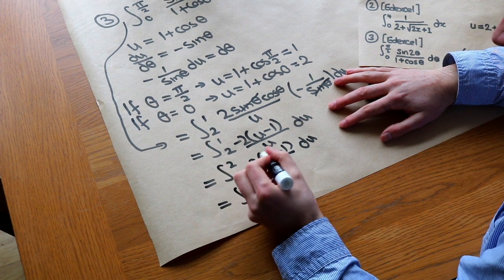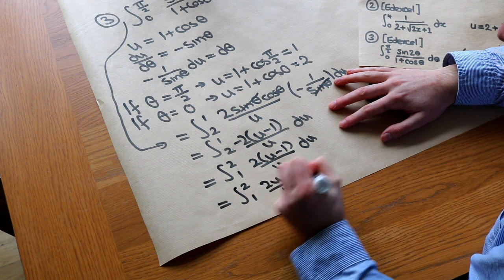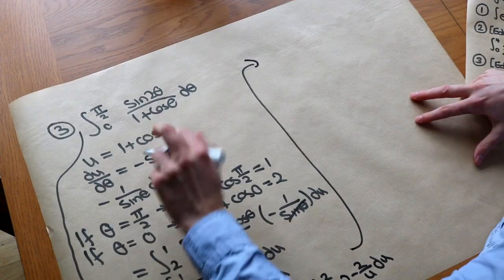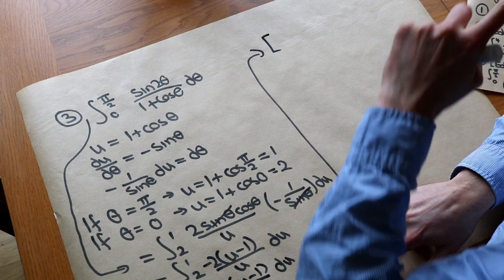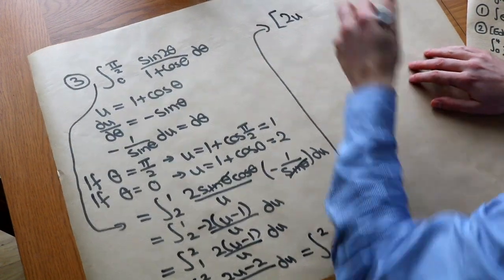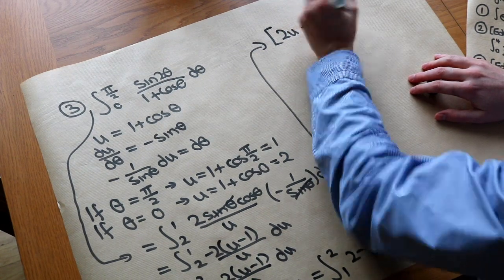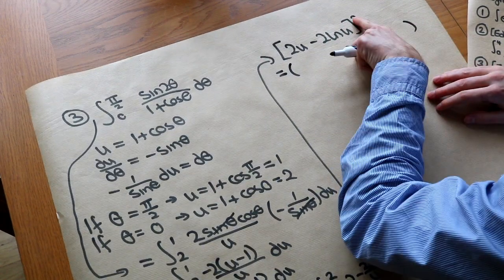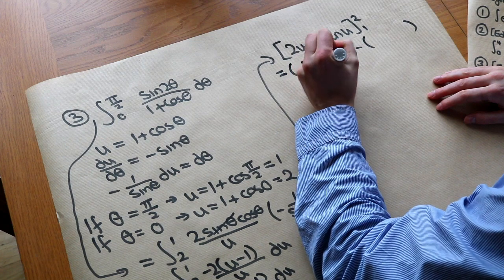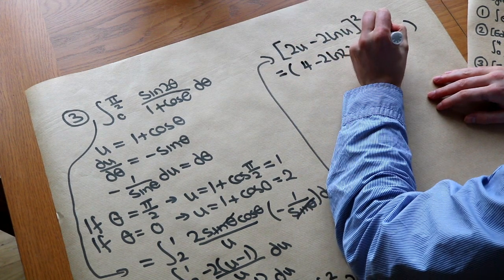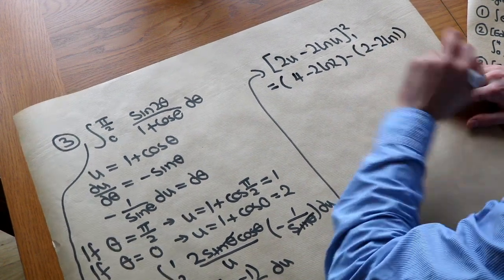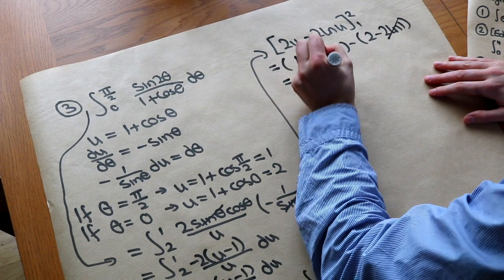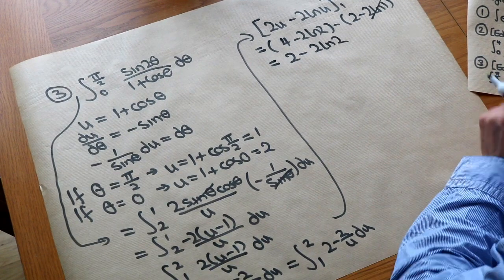Expanding the brackets gives 2u minus 2 over u, and dividing each term by u gives 2 minus 2 over u. Integrating: 2 becomes 2u and 2 over u becomes 2 ln u, with bounds 2 and 1. Substituting 2 gives 4 minus 2 ln 2; substituting 1 gives 2 minus 2 ln 1. Since ln 1 equals 0, we get 4 minus 2, minus 2, which equals 2 minus 2 ln 2. That is the final answer.